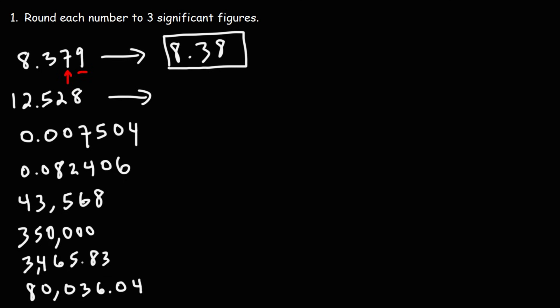What about 12.528? We're going to focus on the third significant digit. Looking at the 2, that tells us we need to round down. So we're going to round 12.528 to 12.5. This number has three sig figs.